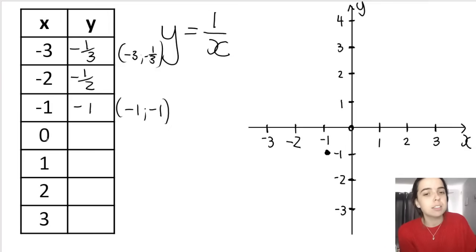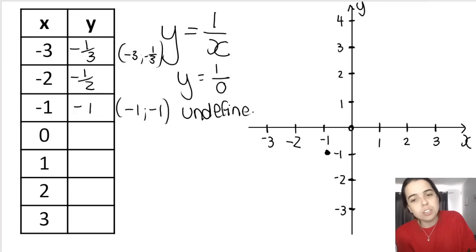If I put x is equal to 0 into my function, so y is equal to 1 over 0, you should know that 1 divided by 0, anything divided by 0 is undefined. What that means is that the function does not exist at that place where x is equal to 0. That means that I need to draw in what we call an asymptote, which is a line that indicates that the function does not exist at that point on the Cartesian plane.